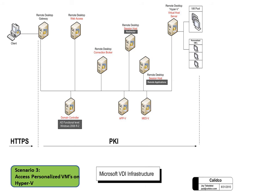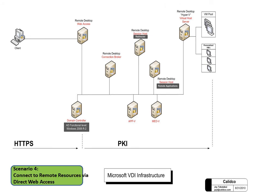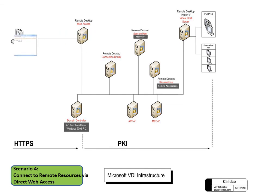There may also be a scenario where no Remote Desktop Gateways are involved; instead the first point of entry is Remote Desktop Web Access, which is simply a web page. The user makes a request, the web page returns a login screen, the user enters login information and gets authenticated, then Web Access shows what applications the user is authorized for.